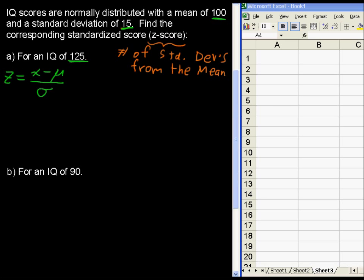By the way, if you have a sample that is normally distributed, you can do the same thing. x, some given x value, minus x bar, which is the sample mean, over small s, which is the sample standard deviation. So we just have the population and the sample here, but the formulas work exactly the same.